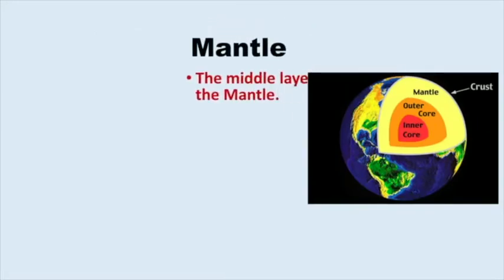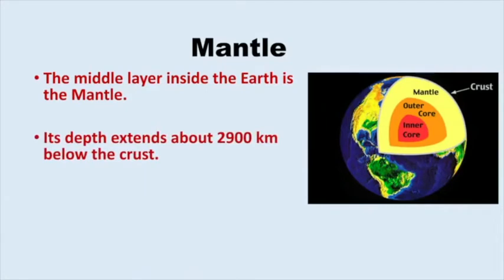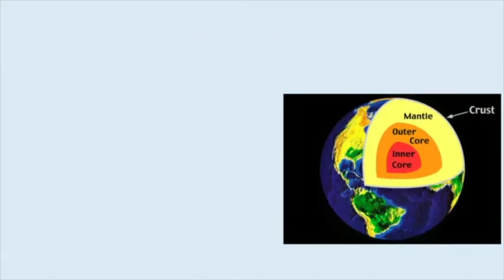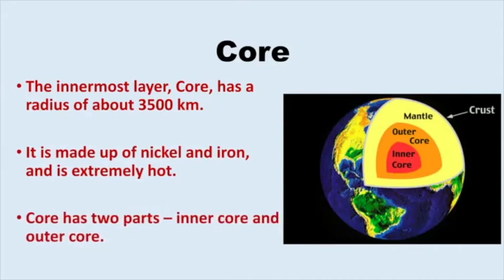After the crust, the second or middle layer is the mantle. It can be as deep as 2900 kilometers below the crust. The mantle contains molten rocks in the form of magma, which when it comes on the earth's surface becomes lava. So magma is found inside the earth whereas lava is outside on the surface. The innermost layer is the core, which has a radius of about 3500 kilometers. Made up of nickel and iron, it has two parts: inner core which is solid and outer core which is liquid. The core has very high temperature and pressure.